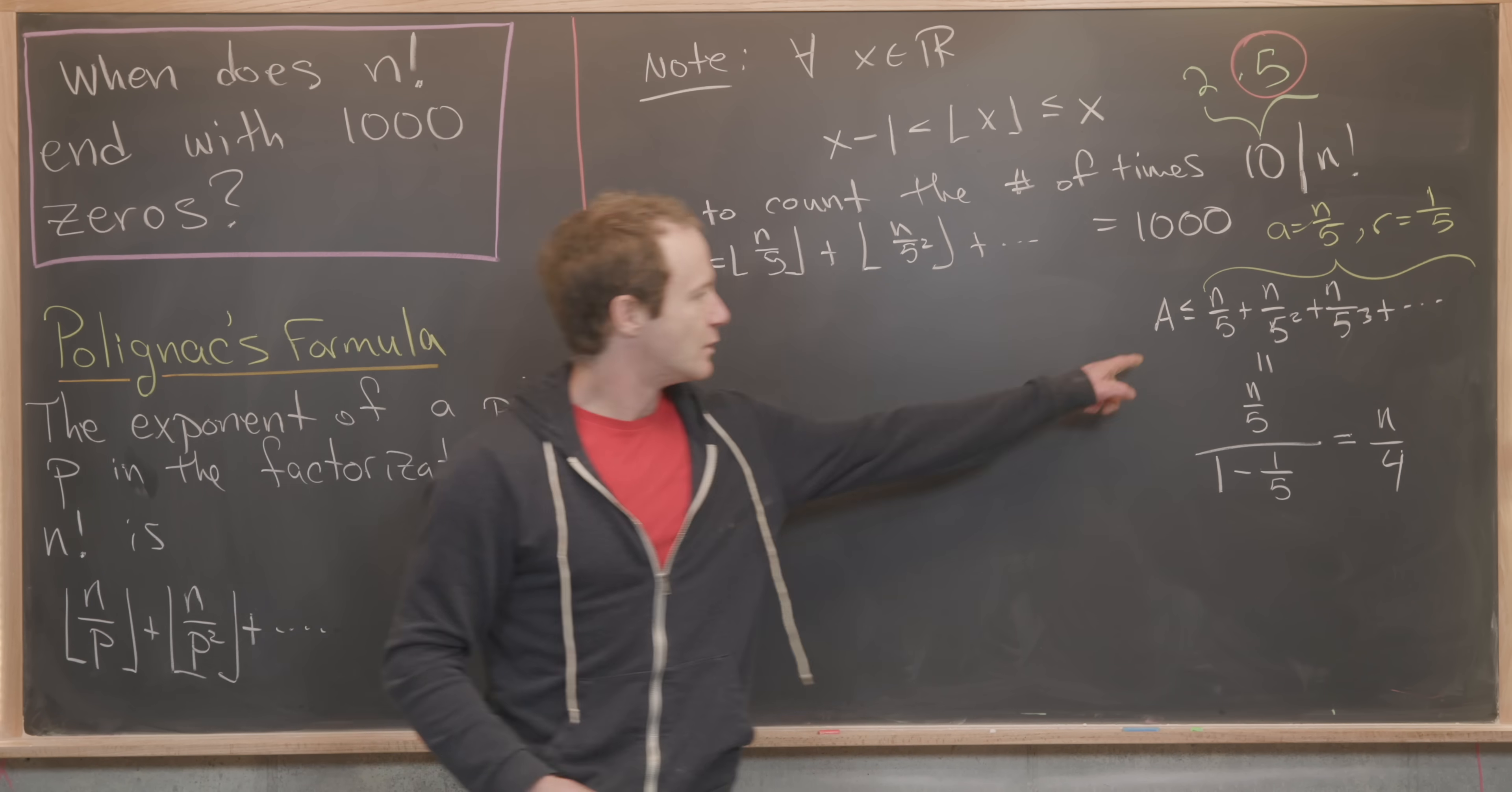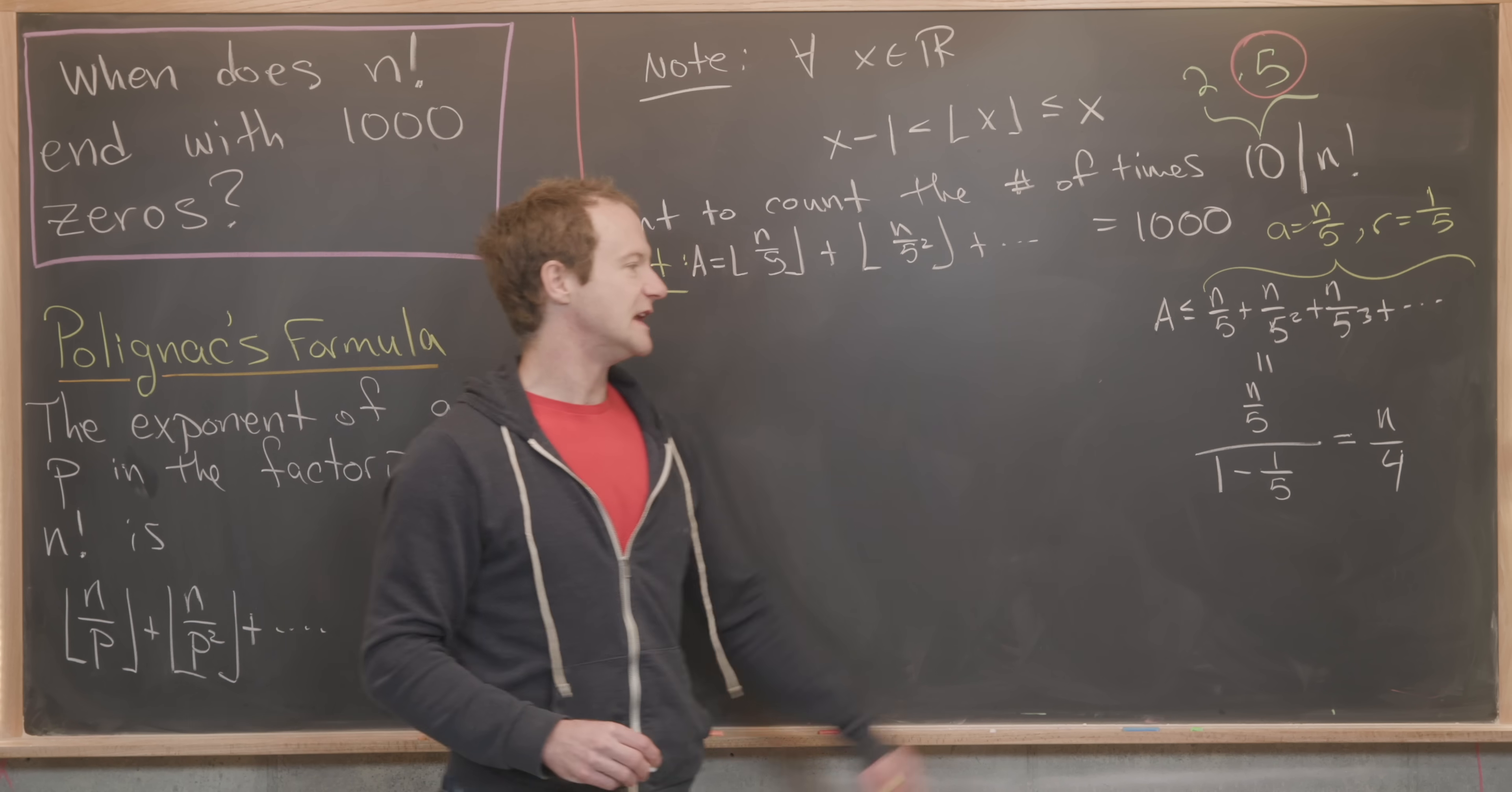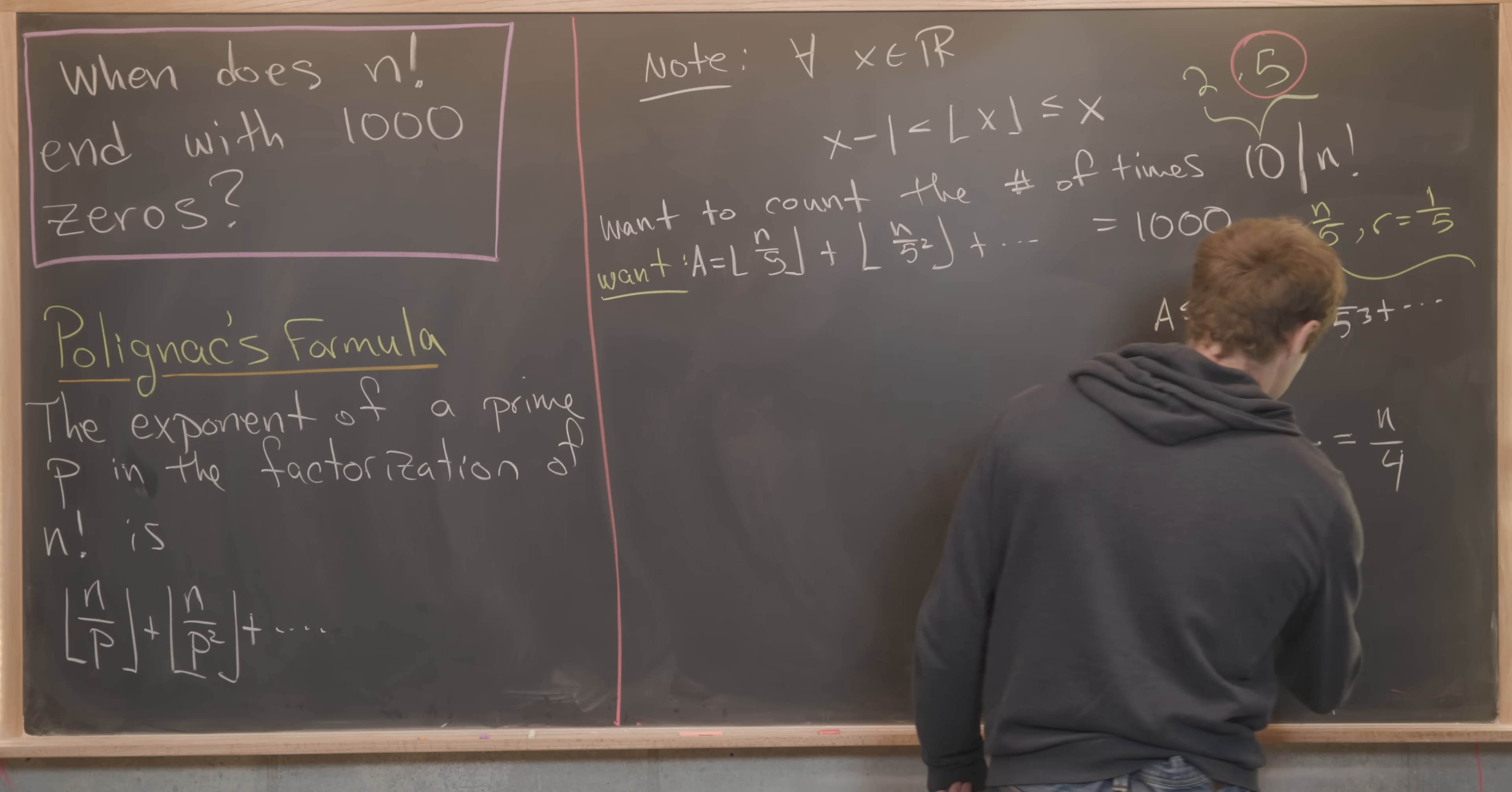Let's see what we've got. We've got our A, which is our goal expression, is less than n over four. But we want it to be equal to 1000. So that means that 1000 is less than n over four, which tells us that n has to be bigger than 4000.